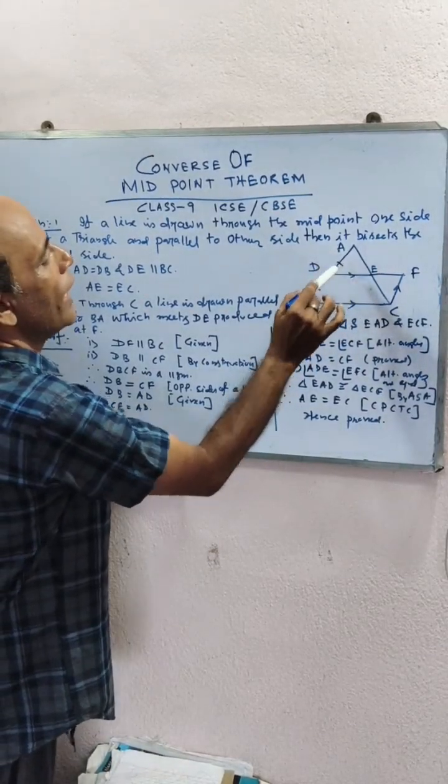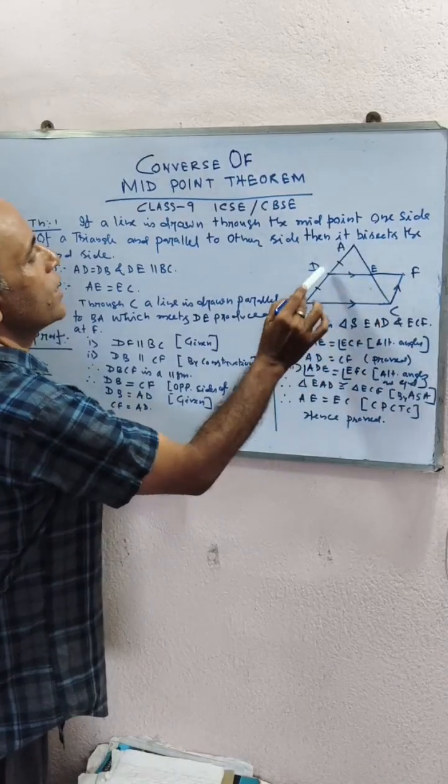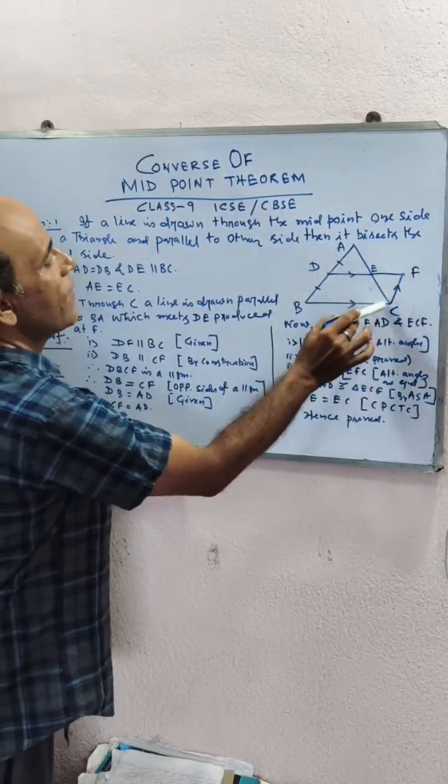DB equal to AD is given. Therefore CF equal to DB equal to AD. That means AD equal to CF.